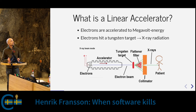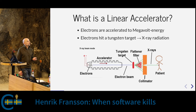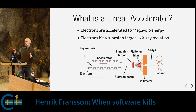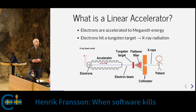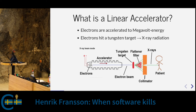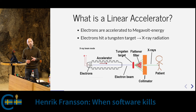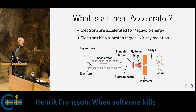In a linear accelerator, you generate a cloud of electrons and accelerate them through a radio frequency field up to a speed close to the speed of light, giving them very high energy. You then smash them into a slab of tungsten — a very heavy metal target — and through some physics the electron beam turns into X-ray or gamma radiation. That radiation is then filtered and shaped, and a collimator lets you aim the beam at the patient to hit the tumor at the right spot.